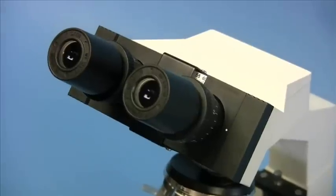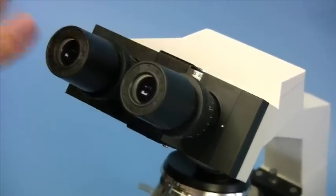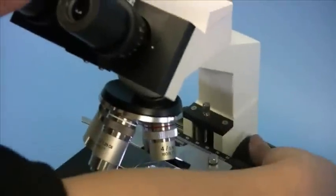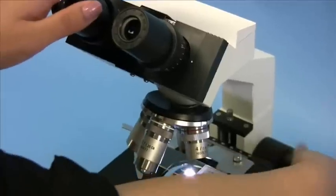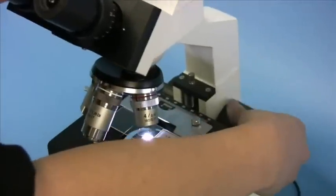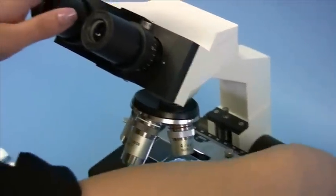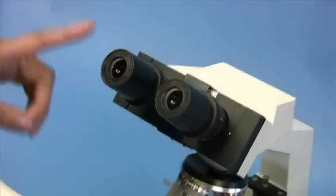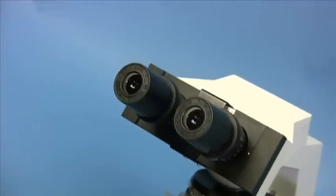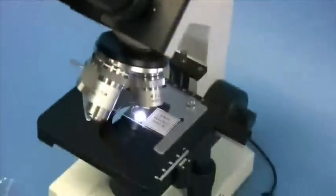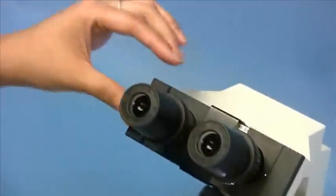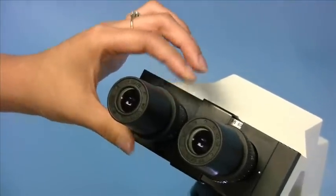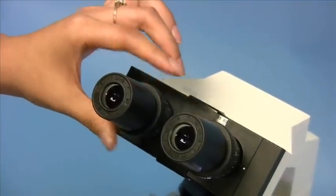Now close one of your eye, let's say the left one, and use your right eye only. Get the image to be focused using the coarse and fine focus adjustment knobs. Once you get it, close your right eye and use your left eye only. Now this time, do not touch the focus adjustment knobs, but only the diopter ring. Adjust it until you get the image focused.